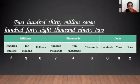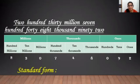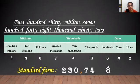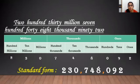So, here we have our number ready. What do we have? It's 230,748,092. As you can see, commas are to be placed while writing the standard form of a number, and the name of the periods are used while writing the number name.